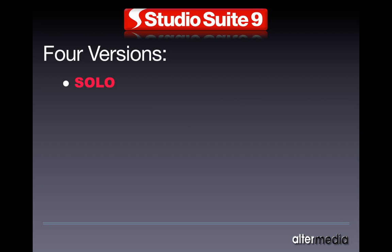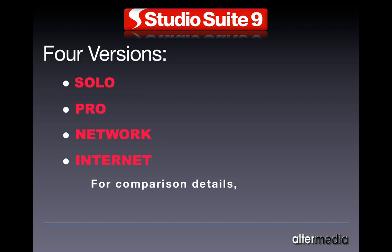Studio Suite now comes in four versions. Solo, which is aimed at students and at-home hobbyists — it's not customizable and is single user. Studio Suite Pro is for a professional that still works at home, needs more power than Solo, and needs to be able to do some customization. Network is for a multi-room facility where multiple people need access to Studio Suite, and the internet version is accessible through a browser. For a comparison of all these different versions, please see our website.